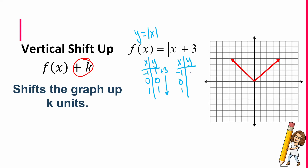Let's graph those dots and see if this graph looks like it's shifted up three. So I'm going to plot negative one, four; zero, three; and one, four. And here is my new V — the graph has shifted up three units.